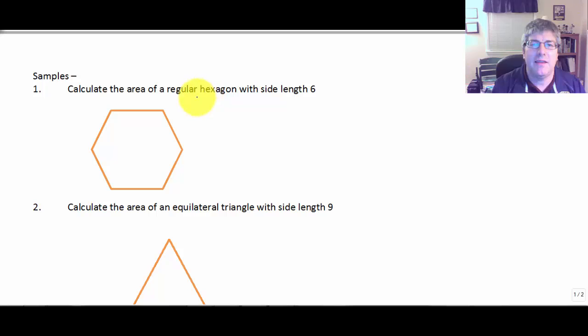So, let's move on to some sample problems. Let's calculate the area of a regular hexagon with side of length 6. So, what do we need? We need the length of our apothem. We don't know what that is. We want to use area equals 1/2 A times P.